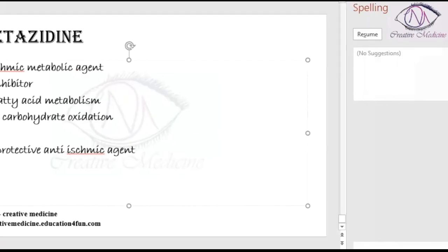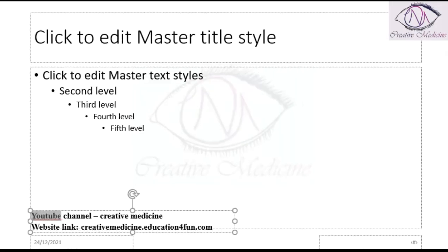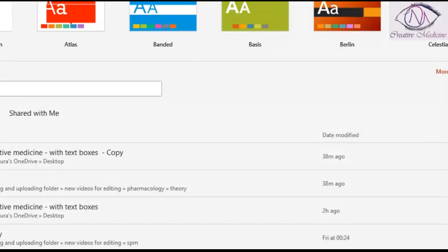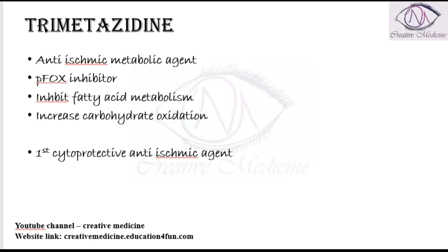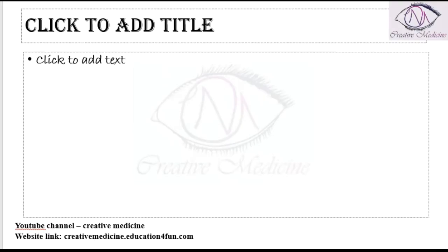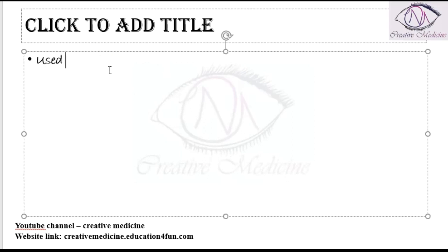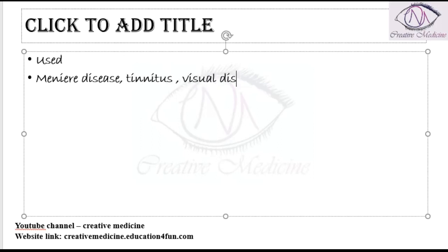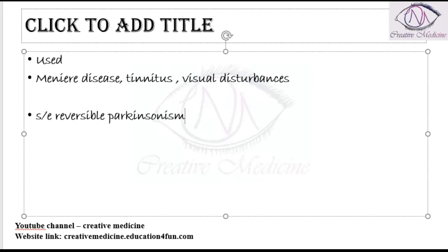The uses of Trimetazidine: it is mainly used in Meniere's disease. It can also be used in tinnitus or if the patient suffers from any visual disturbances. The main adverse effect of Trimetazidine is that it can cause reversible Parkinsonism.